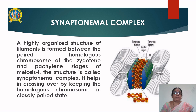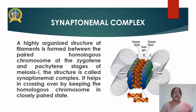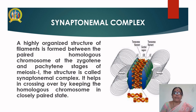Synaptonemal complex. A highly organized structure of filaments is formed between the paired homologous chromosomes at the zygotene and pachytene stages of meiosis I. This structure is called the synaptonemal complex. It helps in crossing over by keeping the homologous chromosomes in a closely paired state.